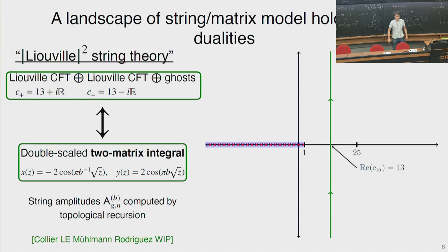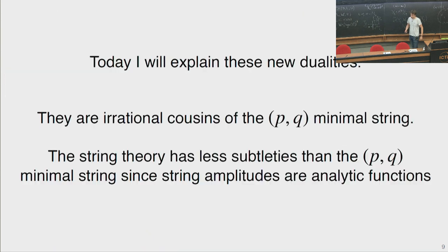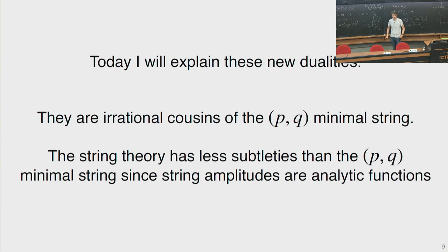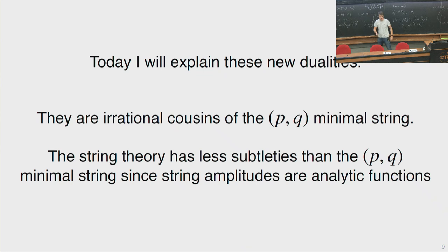Both of these theories can be thought of as irrational cousins of the (P,Q) minimal string, because both exist for continuous values of central charges. The string amplitudes are also continuous functions, since vertex operators in Liouville theories depend on a continuous parameter—the Liouville momentum. Everything has nice analytic structure, and that allows us to analyze and understand these theories better than the ordinary minimal string. I think it's a fruitful thing to look at.